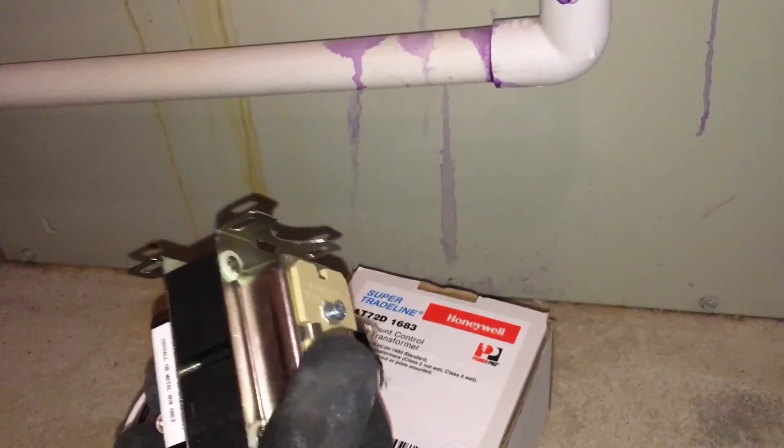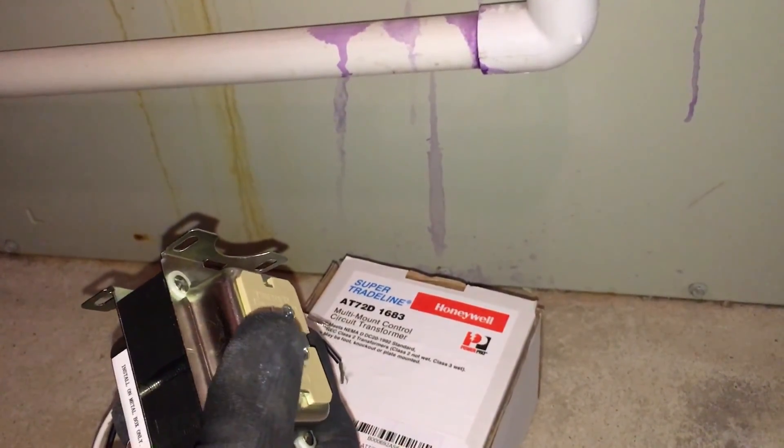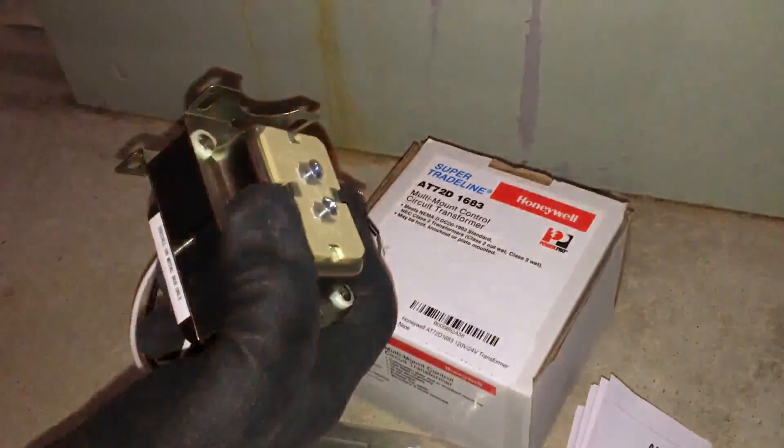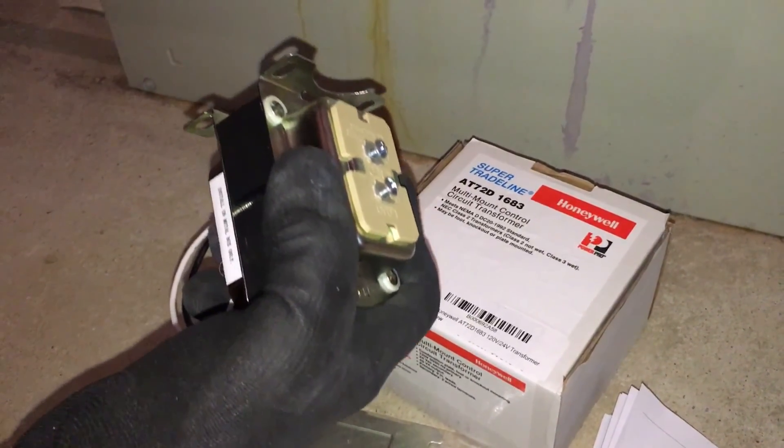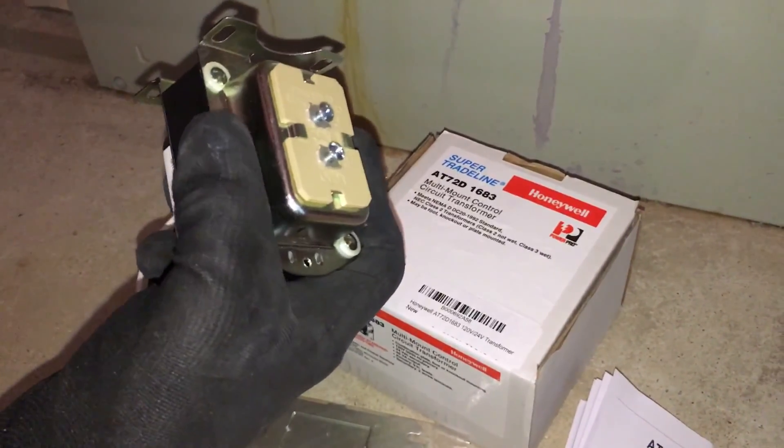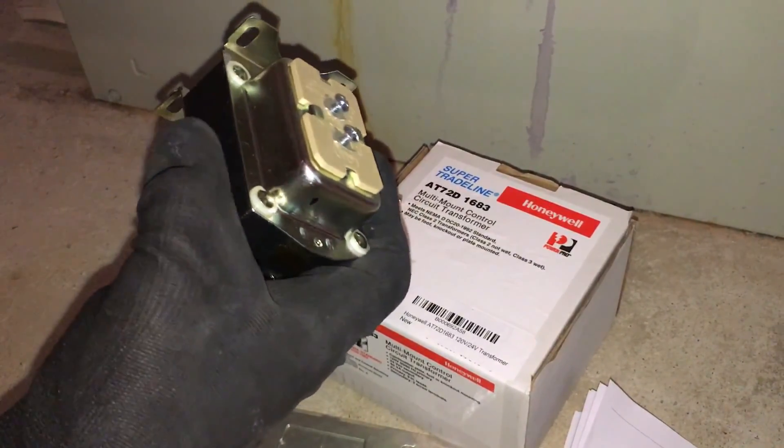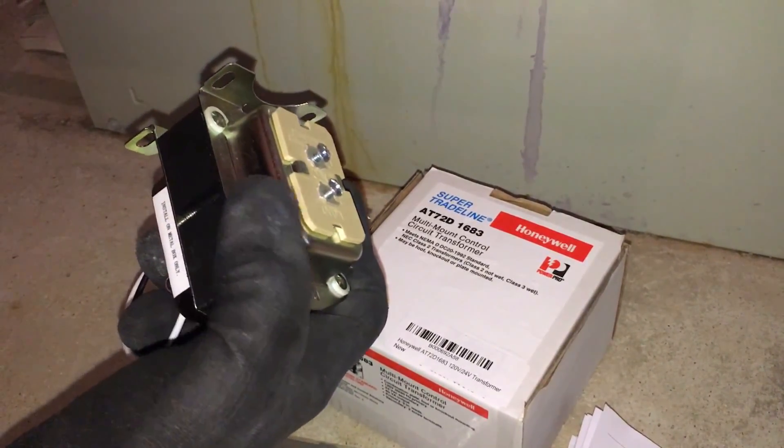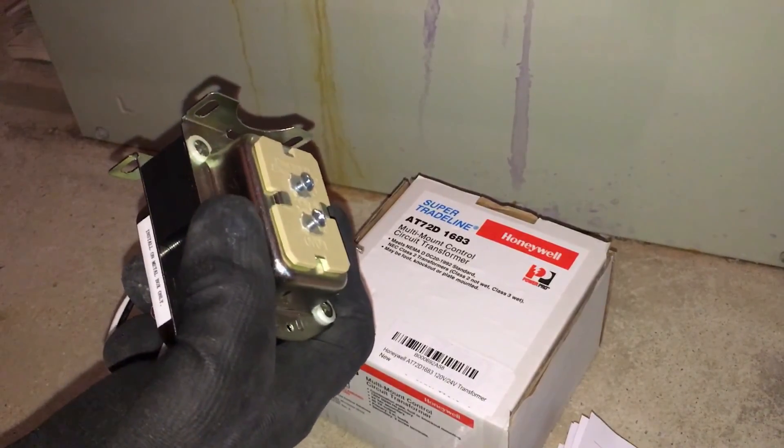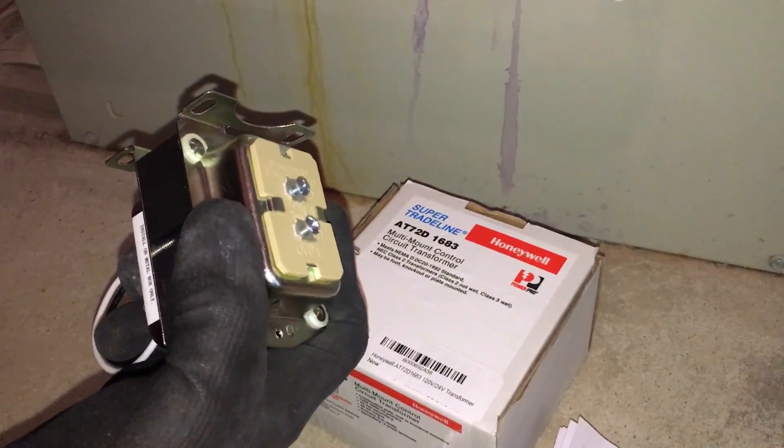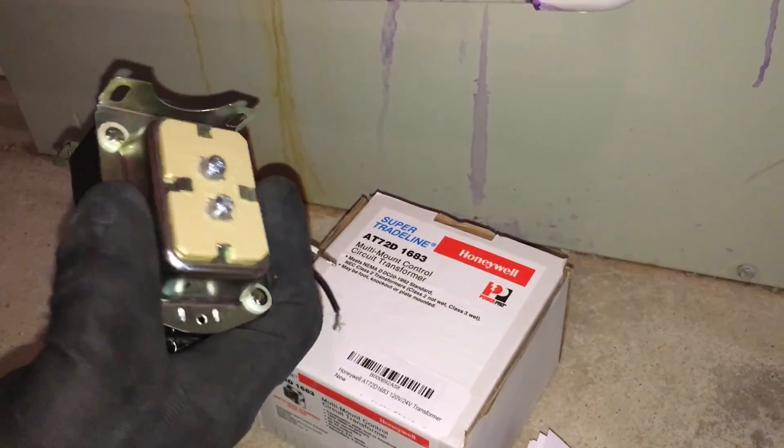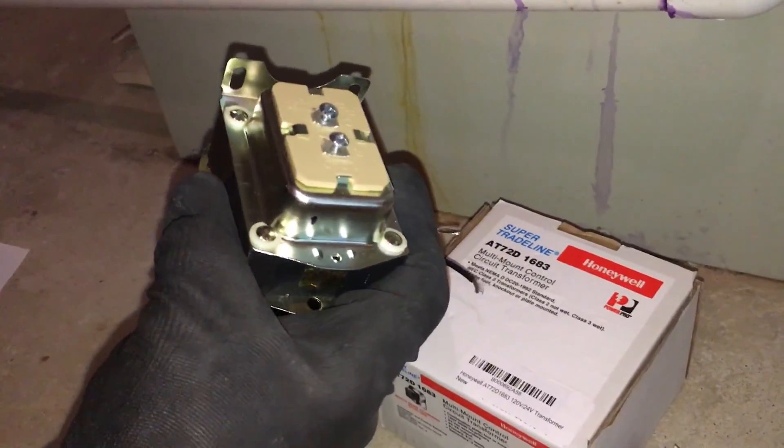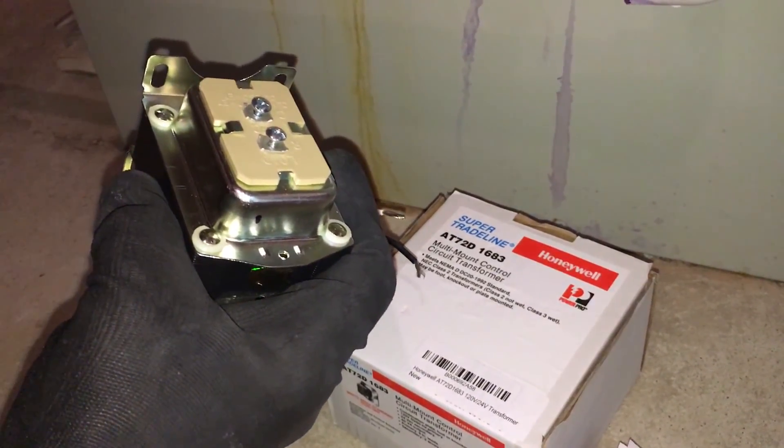This AT72D series, including the AT20, AT40, AT72, AT87, and AT88 transformers, are step-down transformers used primarily for powering 24 VAC applications that do not exceed the transformer voltage ampere rating, the VA rating. This 24-volt transformer is used on most residential and commercial systems for thermostat power, 24V control circuits.